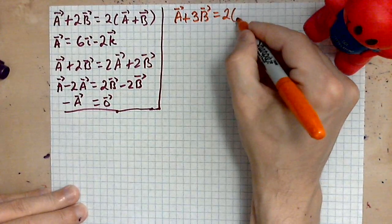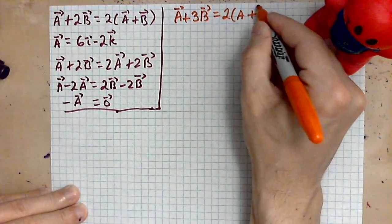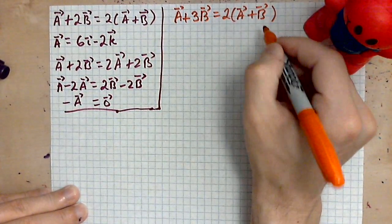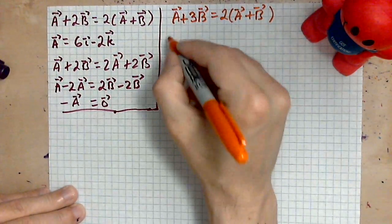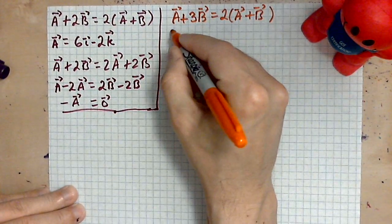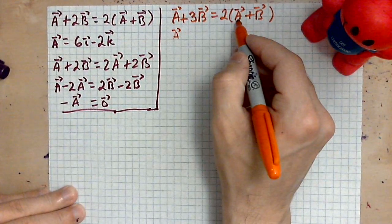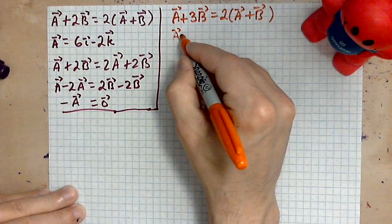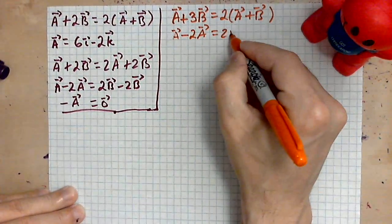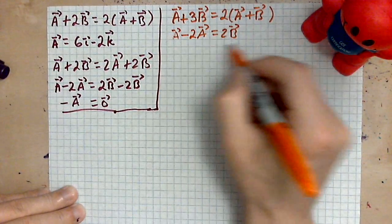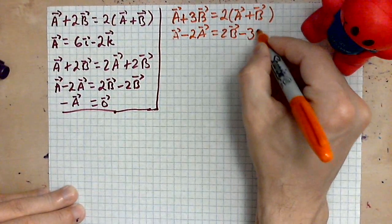Equals 2 times (a plus b). Once again, a vector equation, but you manipulate the symbols the way you manipulate algebraic symbols. So you'll have 2a, and then move to the left side, so it's a minus 2a, equals 2b on the right, and then take the 3b and move it to the right side, so it's minus 3b.